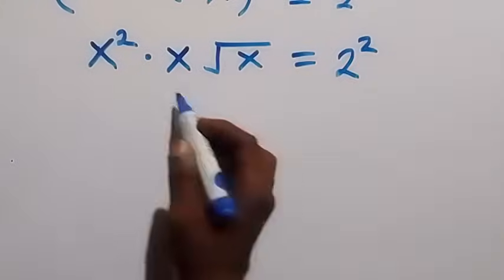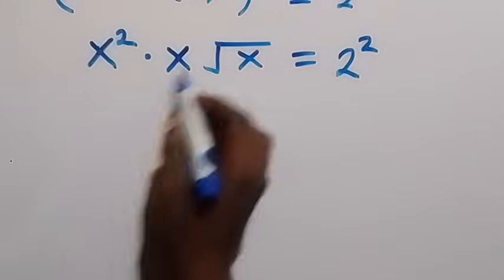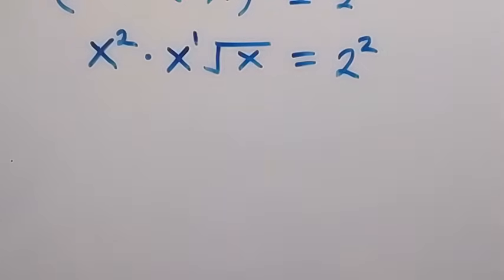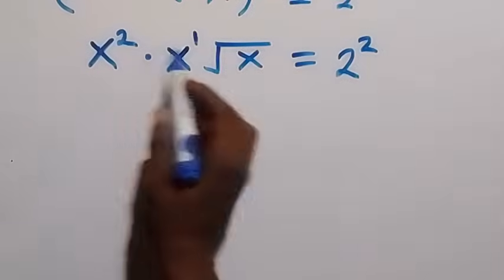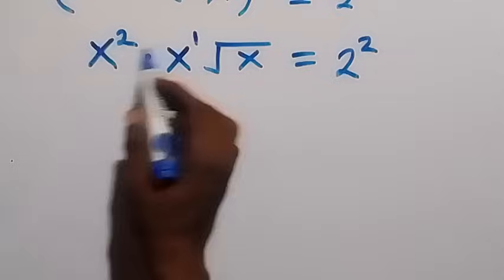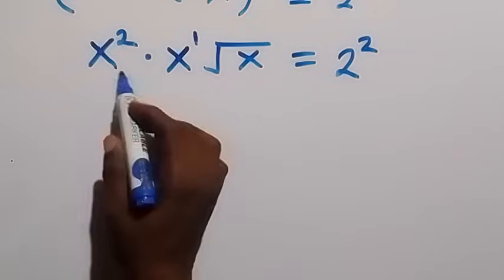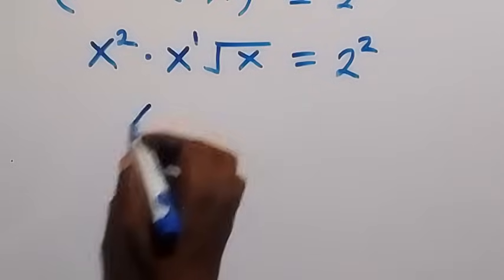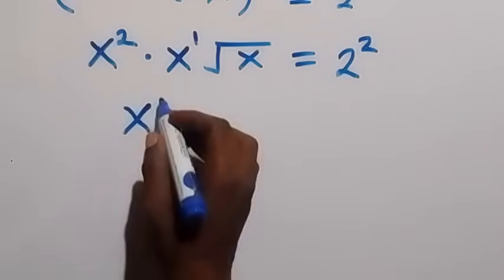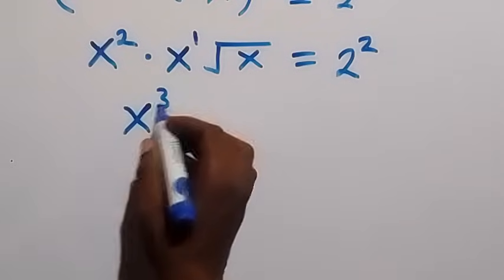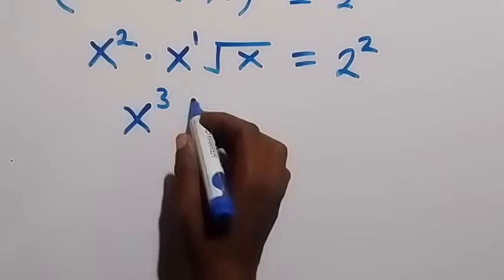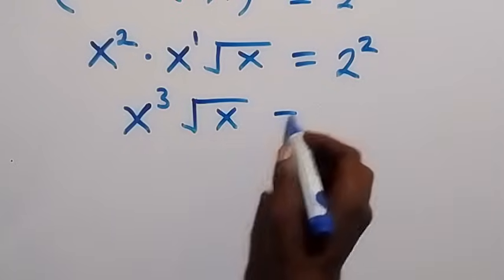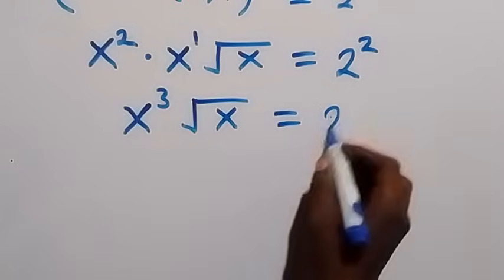In the next step, let's make this together. This is x raised to power 1, then when we apply the law of indices — same base — we can add the powers. We have x cubed then root x, which equals 2 squared.